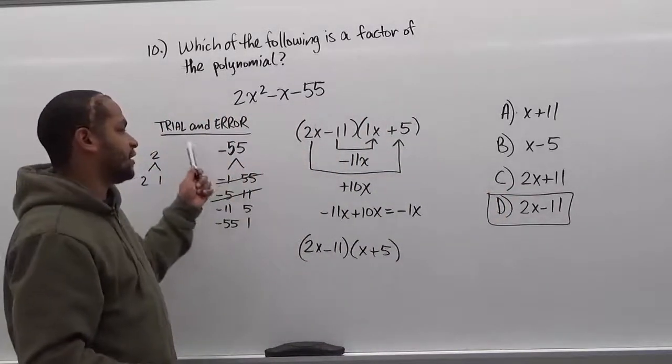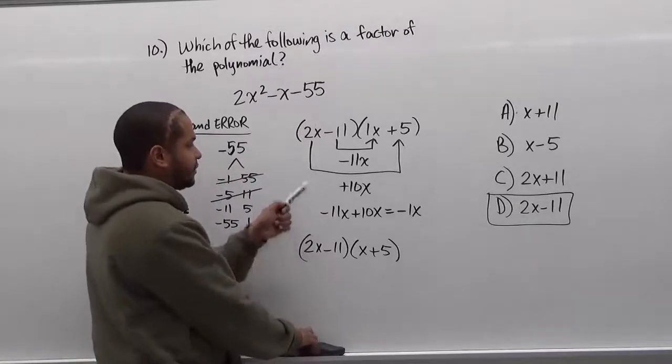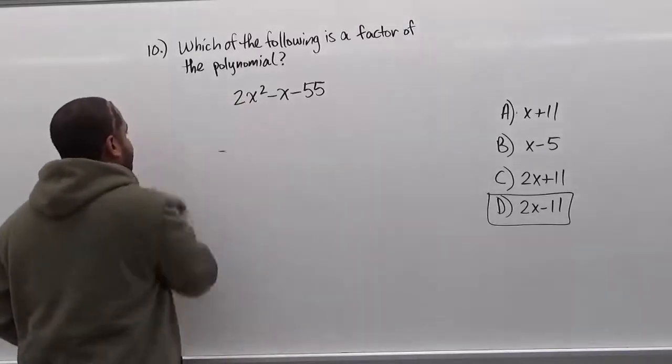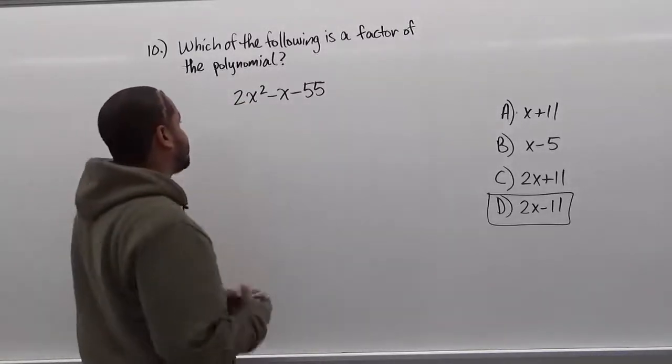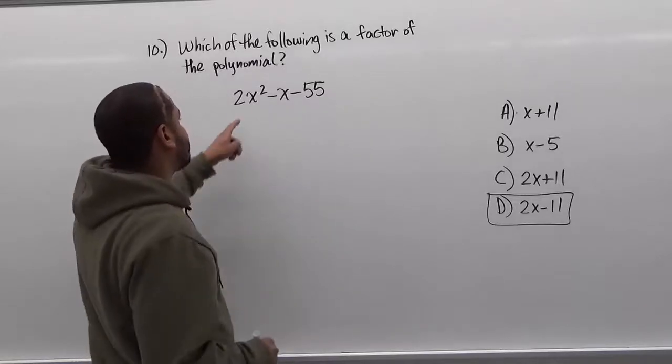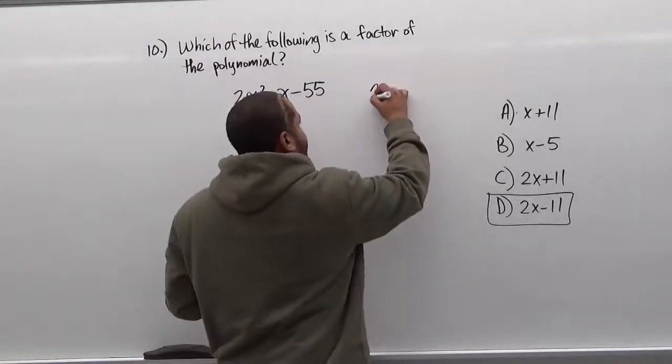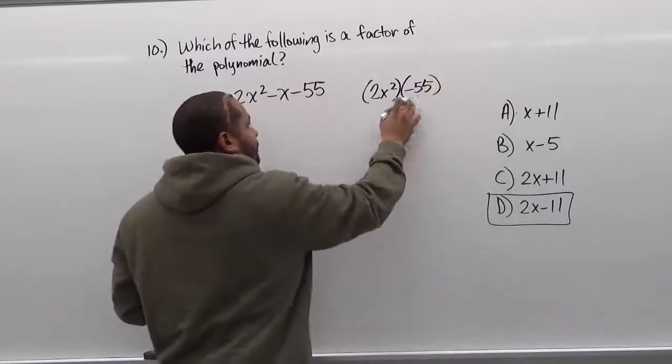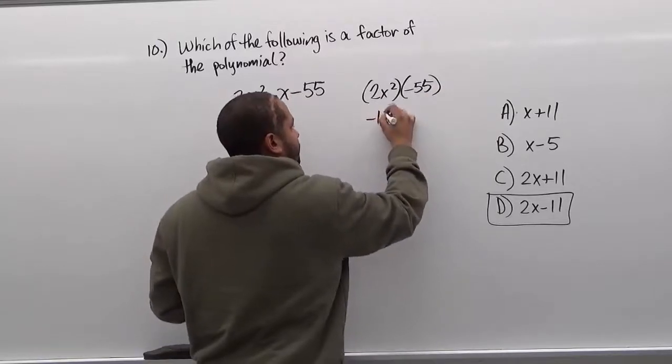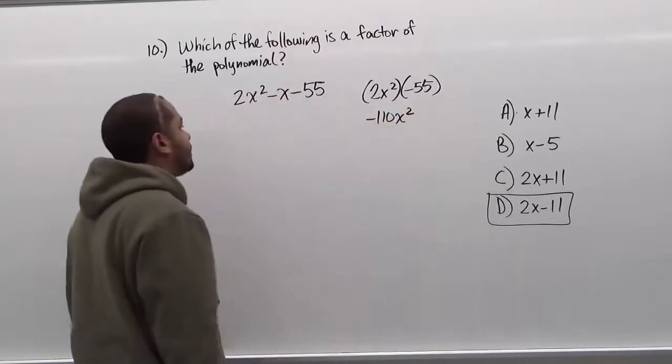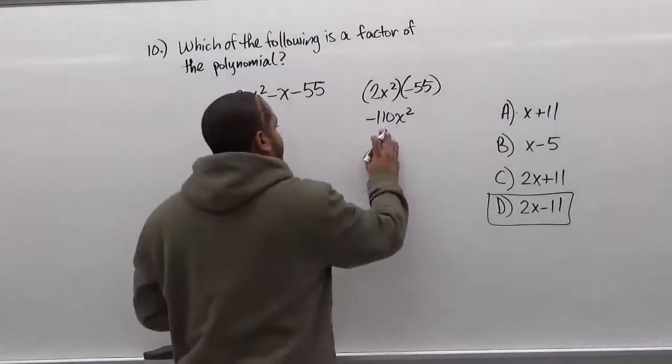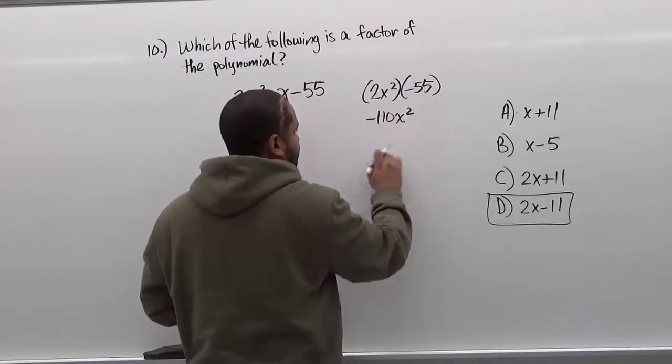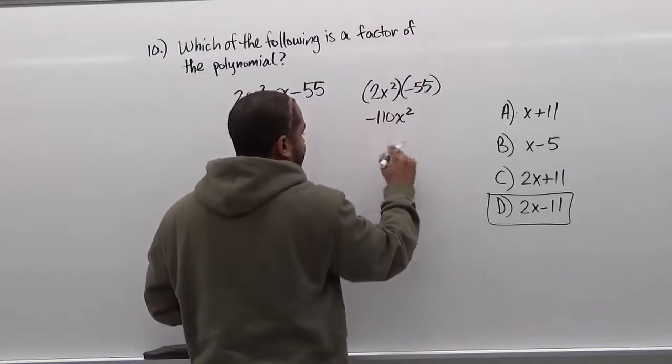Now this takes care of the trial and error method but there's still another method we could use if we don't know how to do this too well. So let's take a look at the AC method and group factoring with the AC method. To do this method we take the first term and the last term and we multiply them together. So we get 2x squared times negative 55. Now the product of these two are going to give us negative 110x squared. Now the way this works is we're going to factor this into two pairs, into a single pair with an x for each term and the factors of negative 110.